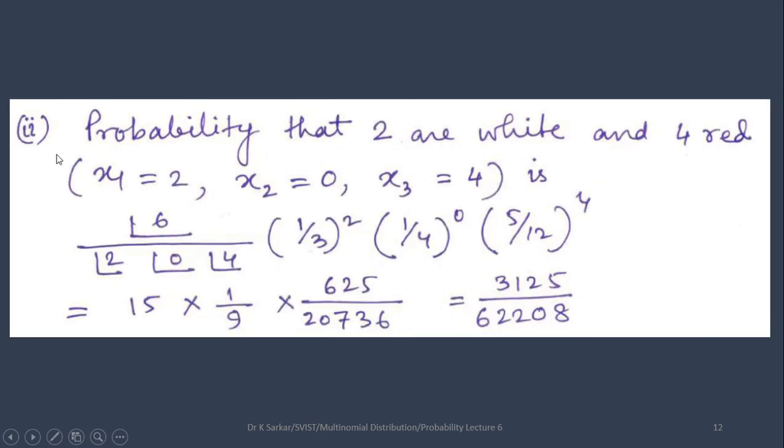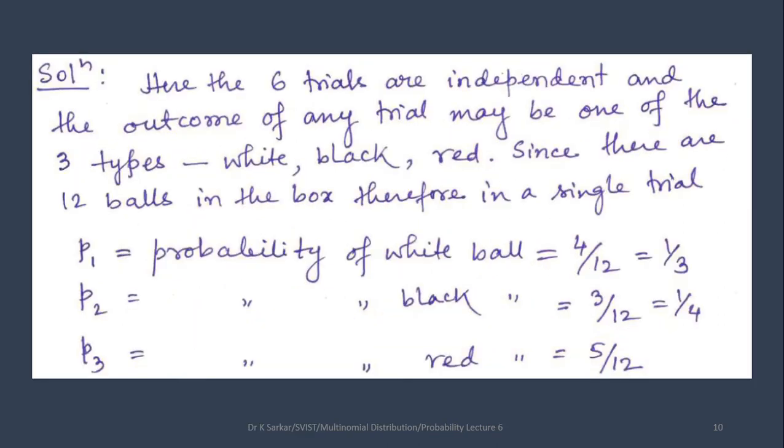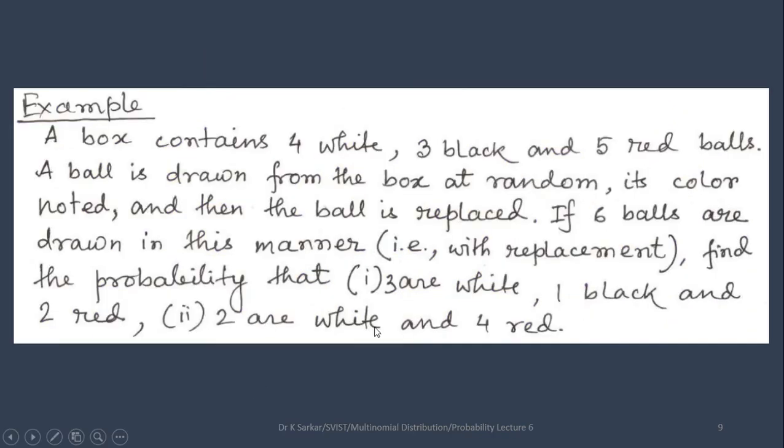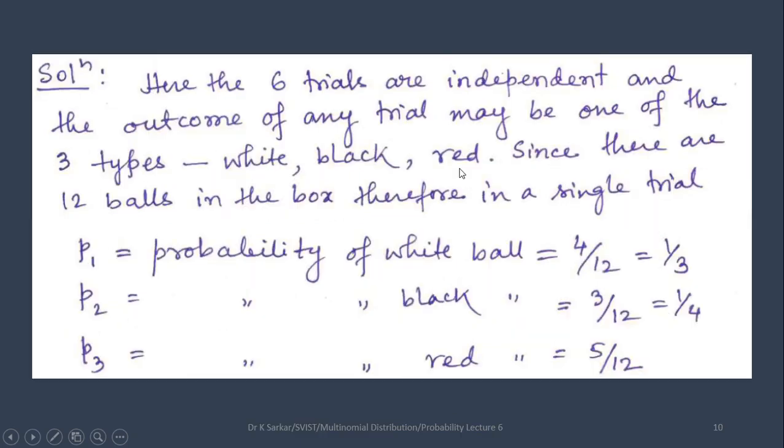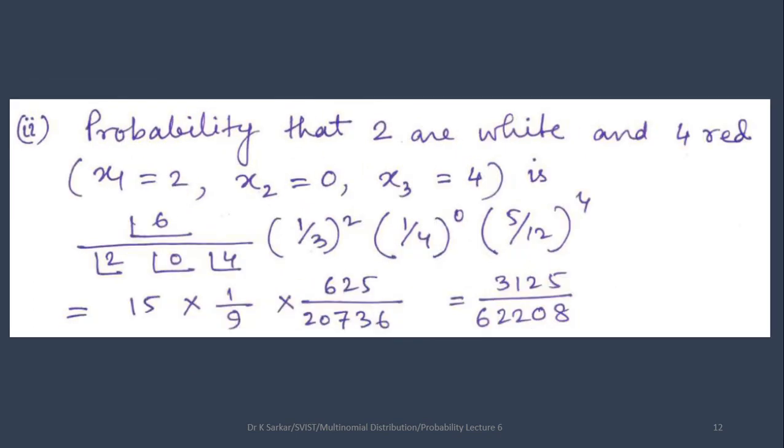Similarly, we can work out number 2. Here, one thing you have to remember, see the question: 2 are white and 4 red. So x3 is 4 red. Nothing mentioned about black. So if it is not mentioned, then you can take it as 0. x1 is mentioned as 2, that is for white and 4 red, so x3 is 4 but nothing mentioned for black. So x2 is 0.